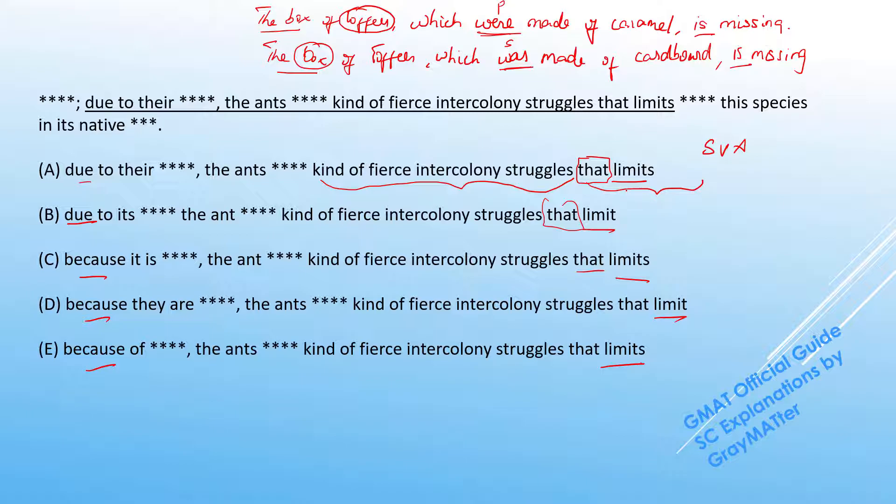So accordingly, when we check the answer choices, we have this logic that something limits the species from spreading and we just need to check the prepositional phrase for what is limiting the spread.